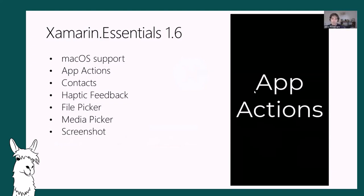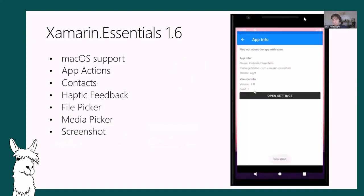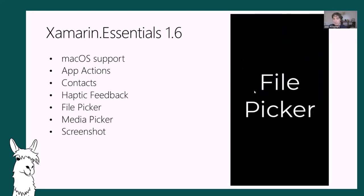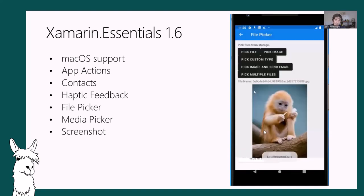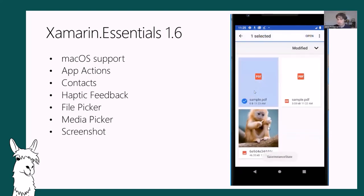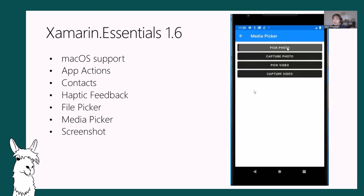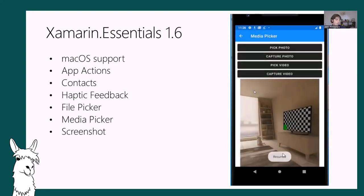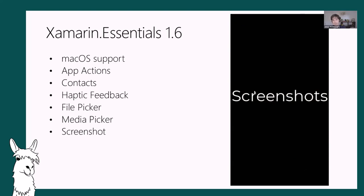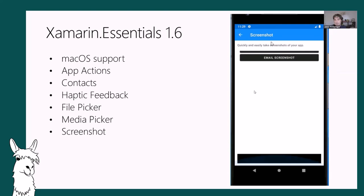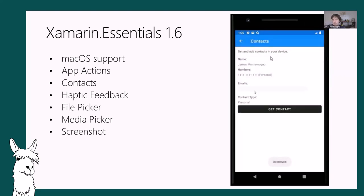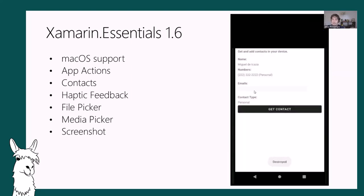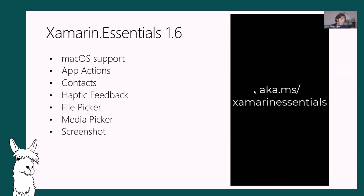A video demonstrates Essentials 1.6 features working on iOS, Android, and Windows: app actions for deep linking from the app icon, file picker for selecting a single file or specifically an image with filters, multi-file picking, media picker for picking or taking photos and videos, screenshots with ability to immediately email the screenshot for help desk scenarios, and a contact picker that launches the default contact app and reads back the information.